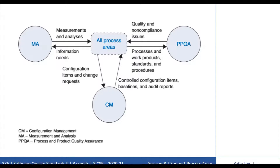The results can be used in making informed decisions and taking appropriate corrective actions. The Process and Product Quality Assurance (PPQA) process supports all process areas by providing specific practices for objectively evaluating performed processes, work products and services against applicable process descriptions, standards and procedures, and ensuring that any issues arising from these reviews are addressed. PPQA supports the delivery of high quality products and services by providing project staff and all levels of management with appropriate visibility into and feedback on the processes and associated work products throughout the life of the project.